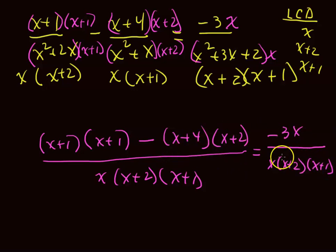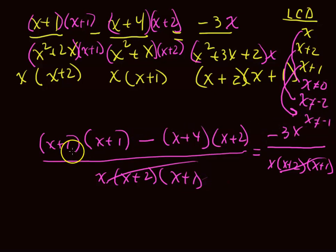I have that x plus 1 times x plus 1 minus the x plus 4 times x plus 2. This is over that common denominator, x times x plus 2 times x plus 1. And that equals the negative 3x over its common denominator, x times x plus 2 times x plus 1. Now, if we multiply both sides by this denominator, this common denominator, those will cancel. You've got to remember, though, that means x cannot be 0, because there was an x in the denominator. From this, x cannot equal negative 2, because if I put in a negative 2, that would have been 0. And from this, x cannot equal negative 1.